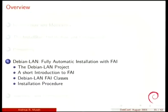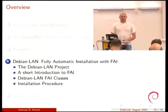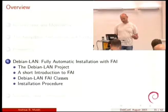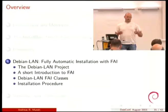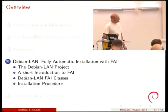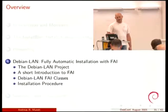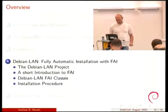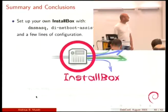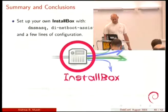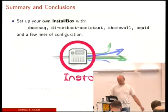Two years ago I gave a talk about Debian LAN, which tries to solve this problem. It's a small project inside Debian with the goal to set up a local area network within Debian as simply as possible. If you're interested, I recommend going back and watching that video — the slides are also online. I will skip over it now, but I left the slides in. Now switching to the summary and conclusions: I hope I gave you an idea how to set up an install box, how to configure dnsmasq, di-netboot-assistant, Shorewall, and Squid with a few lines of configuration.